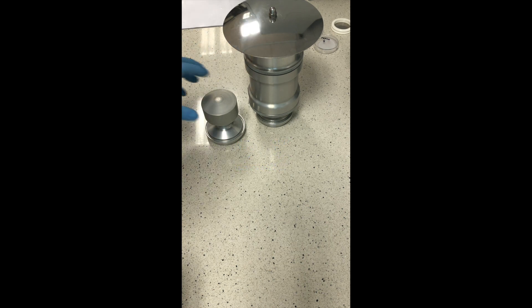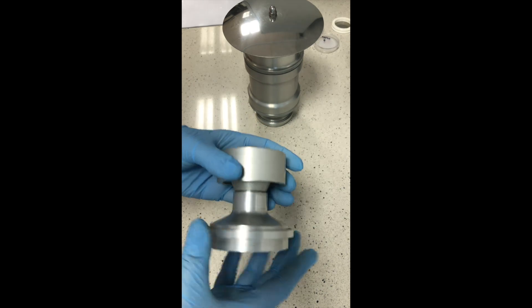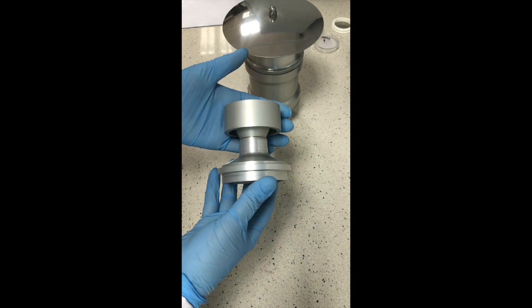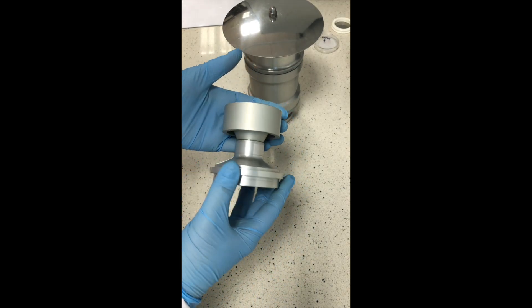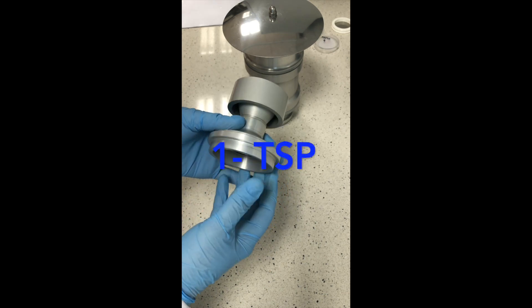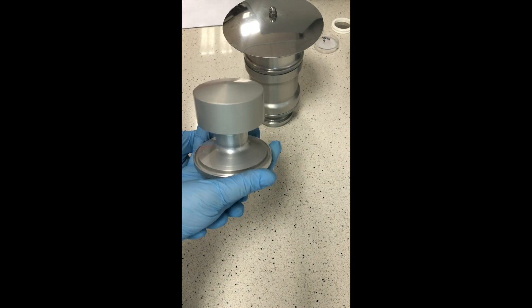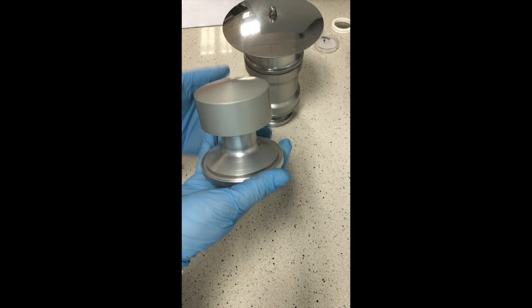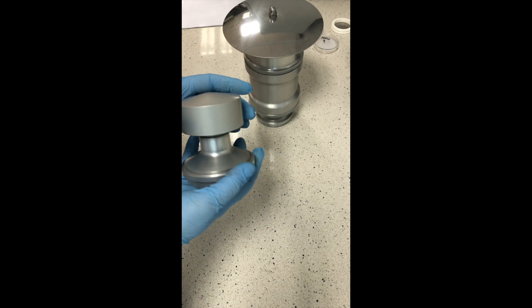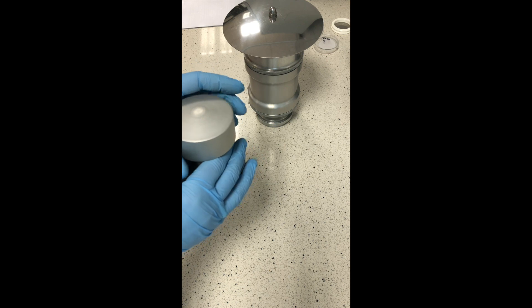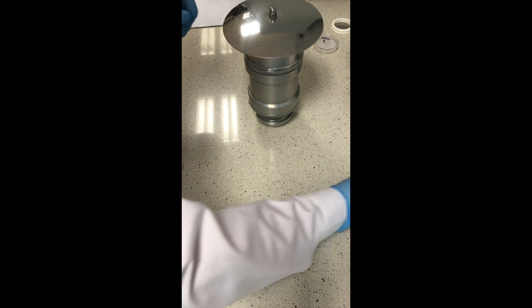Here I have three measuring heads. The first one is this measuring head to collect the total suspended particles. We have only the head that is protecting the equipment from the very big particles, higher than 100 micrometers.